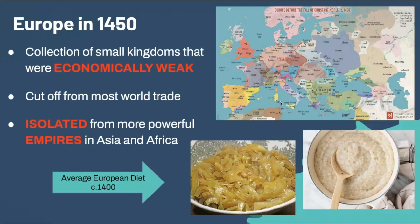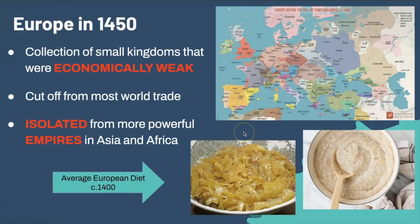To set up the scene here, when we talk about this period in time, Europe during the 1450s is relatively economically weak. While you still have growth, from an economic standpoint, Europe is pretty weak. They're cut off from a lot of world trade — lots of small kingdoms isolated from Asia and Africa. The European diet consisted of things like porridges and cabbage that were stewed, things that aren't particularly tasty.